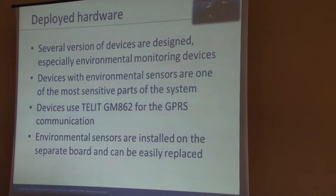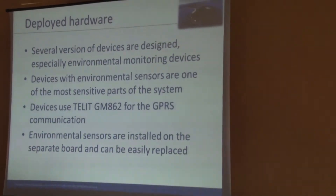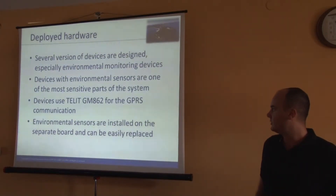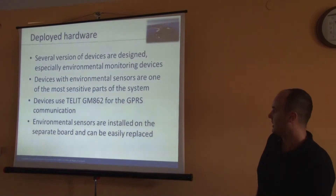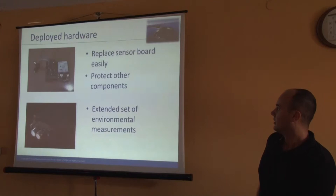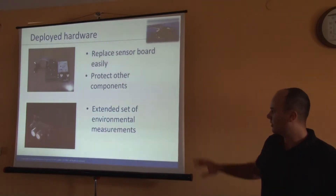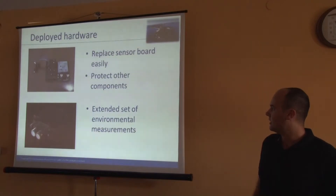As I said, during the project, we identified problems with these devices for environmental monitoring, so we deployed several versions of the device. One of the main things to keep in mind is that sensor boards should be easy to replace and should somehow be isolated from the rest of the electronics. Every device has a GPS module for communication with the server, and environmental sensors are now installed on a separate board. Here are images of the new and newest device for environmental monitoring — the sensor board is easy to replace and can be placed further from the rest of the electronics, because it's exposed to weather conditions like rain, cold, sun, and everything.